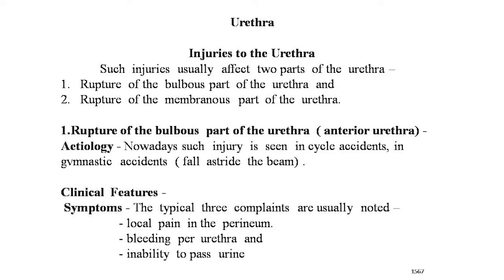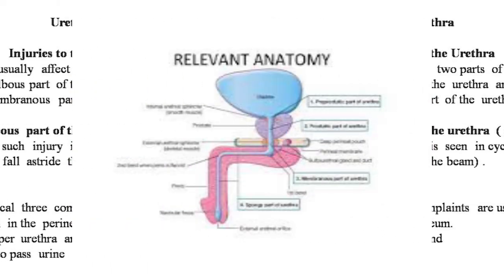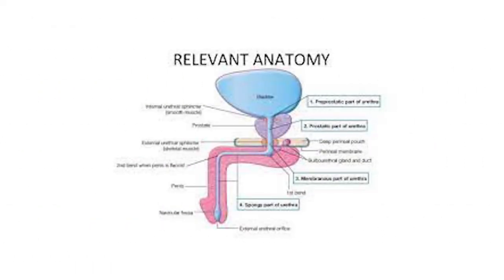The clinical features of rupture of the bulbous part of the urethra include three typical complaints: local pain in the perineum, bleeding per urethra, and inability to pass urine.